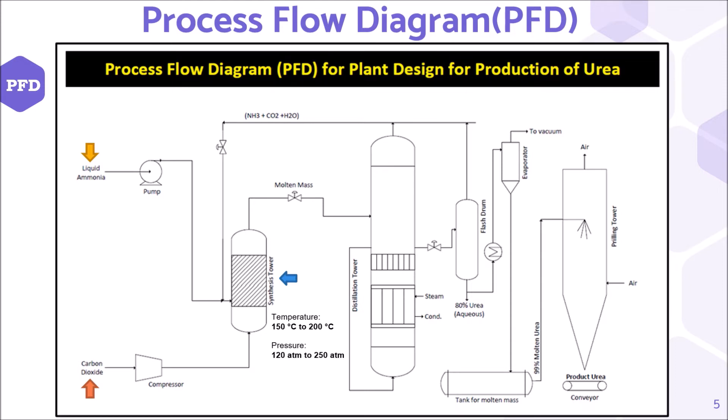Concentrated ammonium carbamate from the distillation tower enters the flash drum. After the flash drum, 80% aqueous urea enters the evaporator, forming 99% molten urea. After the last process in the prilling tower, the urea product is collected on the conveyor.